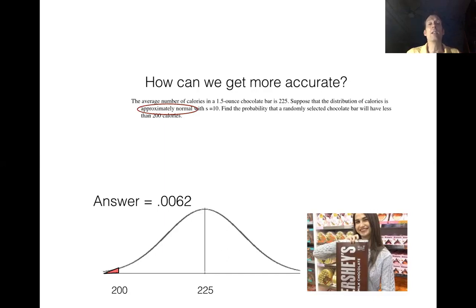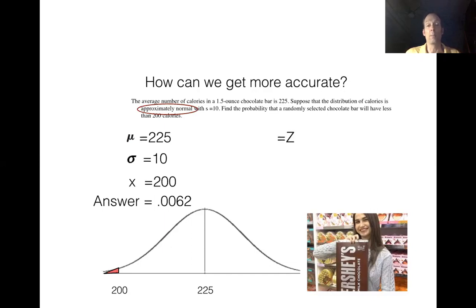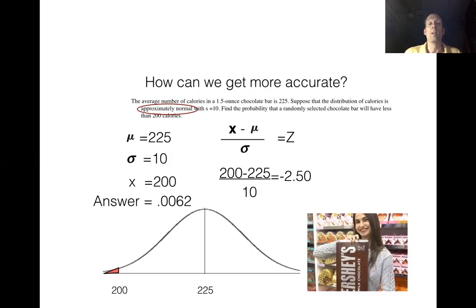How did we know it was exactly 0.62%? We write down all the numbers from the question as if we're going to standardize 200. So mu = 225, sigma = 10, x = 200. Then we use the z formula: z = (x − μ) / σ. Filling in the values, z of 200 comes out to negative 2.5.